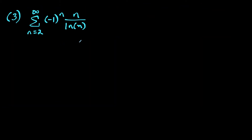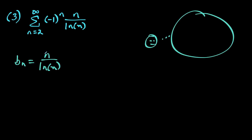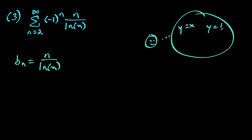For this next question, right away b sub n is n over natural log n. A key idea is that n increases at a faster rate than natural log of n. One way to see this: the graph of y equals x is a diagonal line, whereas natural log x levels off and flattens out.